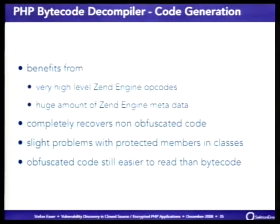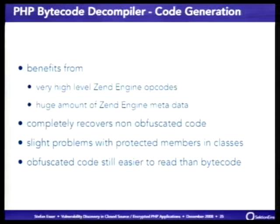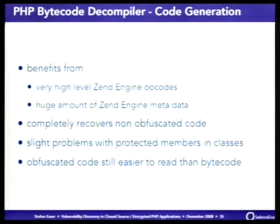I'm running out of time so I'll speed up. PHP bytecode decompilation benefits greatly from the fact that the Zend engine has very high-level opcodes and a huge amount of Zend engine metadata is present within the encrypted bytecode, so you can restore a lot of things. Decompilation usually completely recovers unobfuscated code. There are small problems with protected members and inherited class methods, but obfuscated code is still easier to read than raw bytecode.